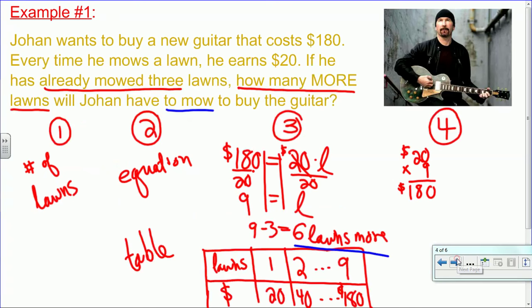This is the next section. In this example, we're going to read together that Johan wants to buy a new guitar that costs $180. Every time he mows a lawn, he earns $20. If he has already mowed three lawns, how many more lawns will Johan have to mow to buy the guitar?